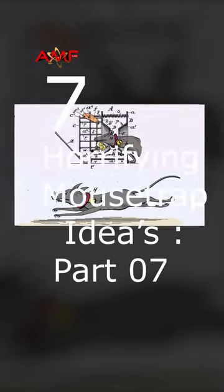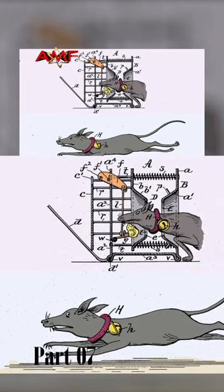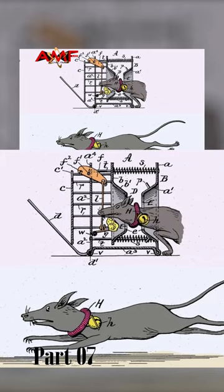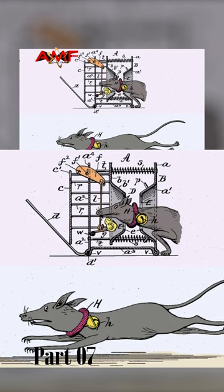7 Horrifying Mousetrap Ideas, Part 7. This trap would make a mouse a pariah in its own community. What if the mouse became the trap? How? This is the most complex of the better mousetraps. The idea is to lure an animal in and then put a bell around its neck.